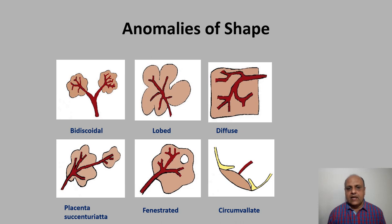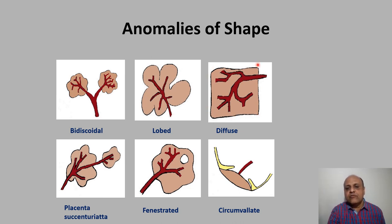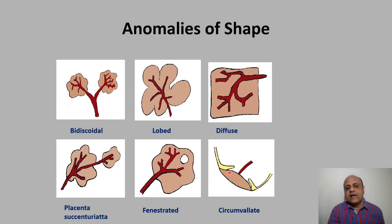There may also be anomalies in the shape of the placenta. A placenta with two parts is called a bidiscoidal placenta. The placenta may be one but lobed. A thin, paper-like placenta not of typical disc shape is called a diffuse placenta. When a small part is separated from the larger part, it is called placenta succinturiata. A hole in the placenta is called a fenestrated placenta. When the placenta is covered by a fold of decidua on the peripheral aspect, it is called a circumvallate placenta.